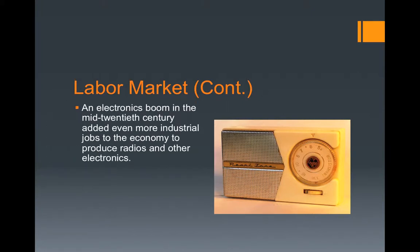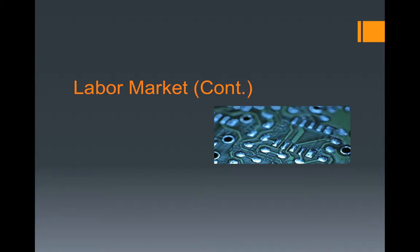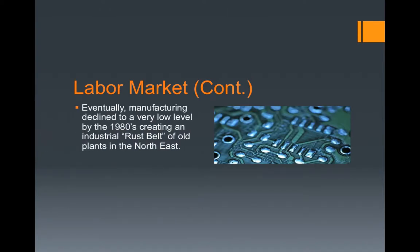An electronics boom took place in the mid-20th century and added even more industrial jobs to the economy to produce radios and other electronics. Industrial jobs, however, began to decline in the early 1960s with increasing competition from foreign products entering the market. Eventually, manufacturing declined to a very low level by the 1980s, creating an industrial rust belt of old plants in the northeastern United States.